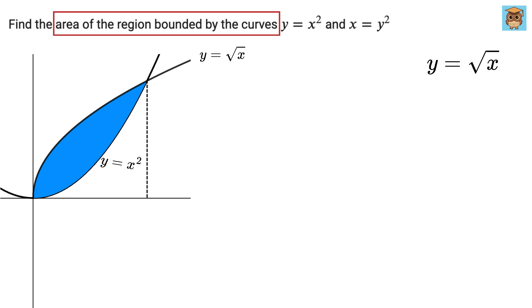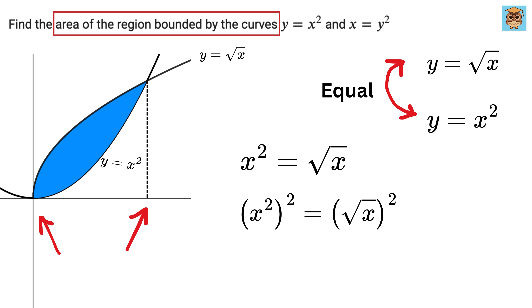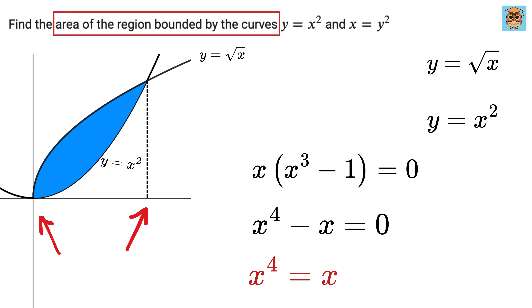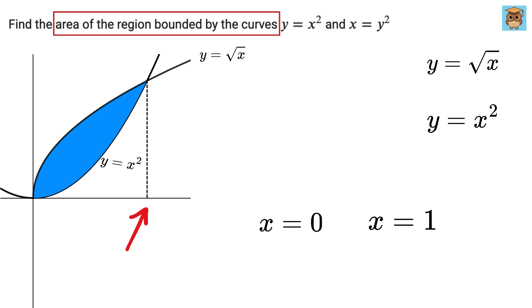Now let's find the points where the two curves meet by setting x squared equal to the square root of x. This gives x squared equals the square root of x. Squaring both sides, we get x to the power 4 equals x. Rearranging, x to the power 4 minus x equals 0, which factors as x times x cubed minus 1 equals 0. This means x equals 0 or x equals 1. So the curves meet at x equals 0 and x equals 1.